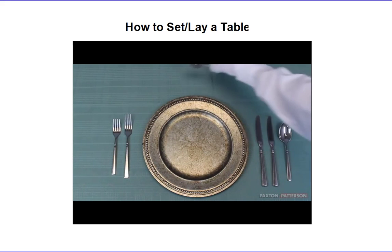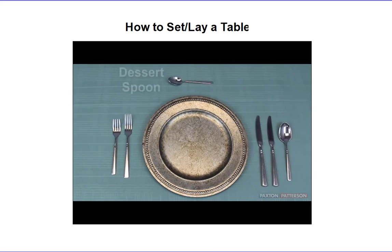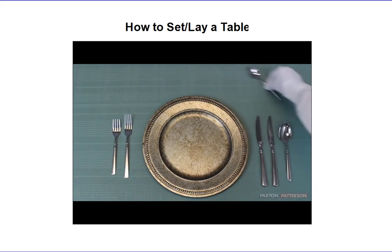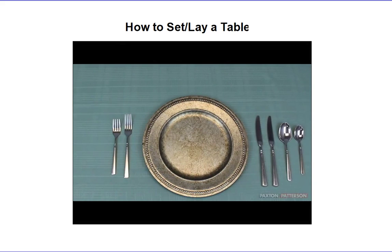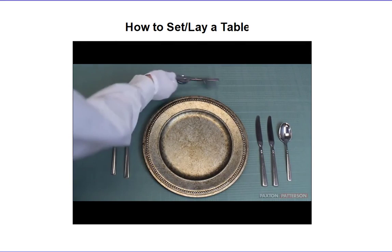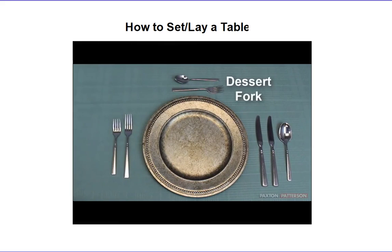If you're having ice cream for dessert, you'll need a spoon for that. The dessert spoon goes at the top with the handle to the right, so you can easily move it to the appropriate spot when it's dessert time. If you are having cake, a fork goes at the top turned so you can slide it down later.